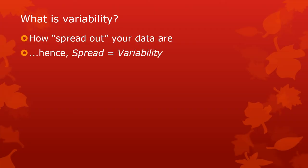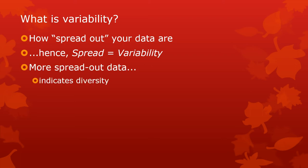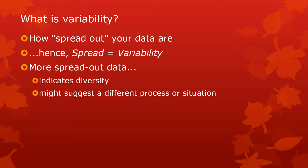Variability is just how spread out your data are. If you drop a glob of jam on a plate and it stays in a glob, there's not much variability. If you take a butter knife and spread it all over the plate, now there's a lot of variability, even though the amount of jam didn't necessarily change. More spread out data usually indicates some kind of diversity or a different process or situation leading to whatever's happening in your data than data that is less spread out.